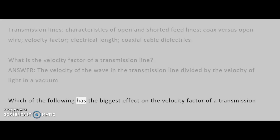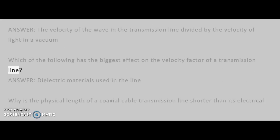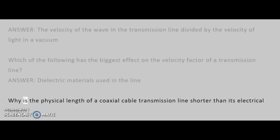Answer: The velocity of the wave in the transmission line divided by the velocity of light in a vacuum. Which of the following has the biggest effect on the velocity factor of a transmission line? Answer: Dielectric materials used in the line.